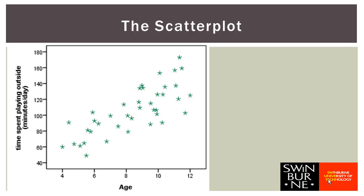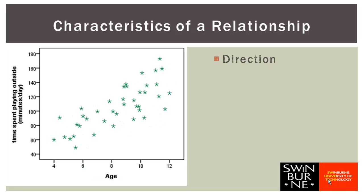In this scatter plot each point represents one child, so for each child we are plotting their age against the time they spent playing outdoors. We can use the scatter plot to describe the relationship between age and time spent playing outside in our sample. There are four different features to look at: the first is the direction of the relationship, the second is the form, third we look for outliers, and fourth we look at the strength. We will talk about each one in turn.